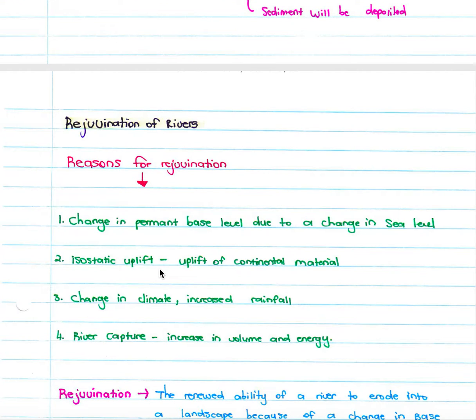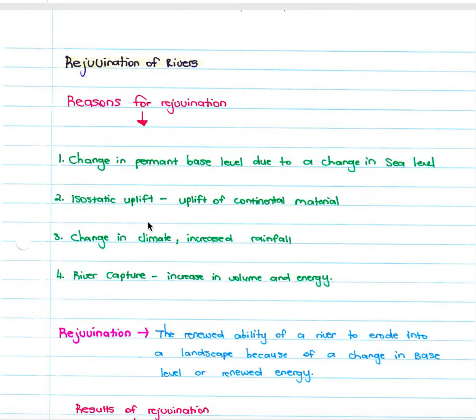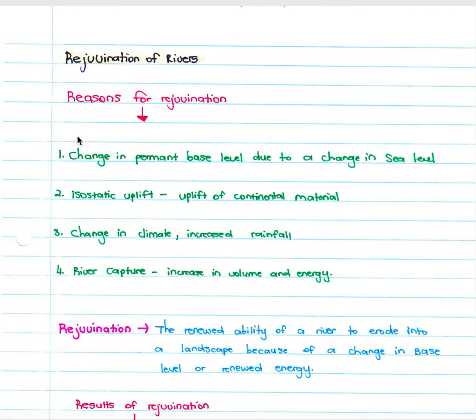Then we look at the rejuvenation of rivers. There are four reasons for the rejuvenation of a river. Firstly, a change in the permanent base level due to a change in sea level. So if your sea level rises or drops, then there will be rejuvenation of the river as it tries to erode or deposit in order to get a graded profile.